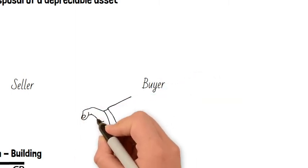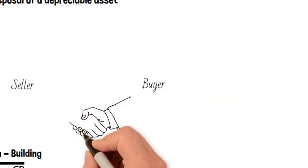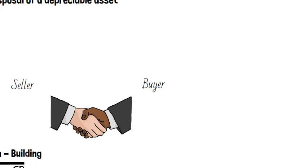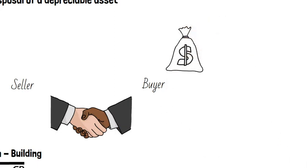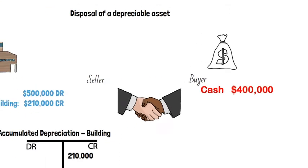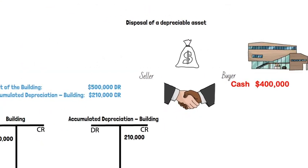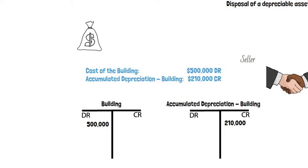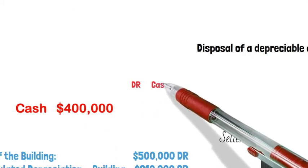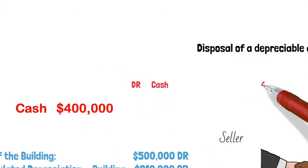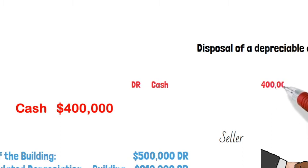Suppose the seller and the buyer make a deal and the buyer will pay cash $400,000. Let's take a look at the general entry on the seller's side. The seller received $400,000 cash, so the seller is going to debit cash for $400,000.